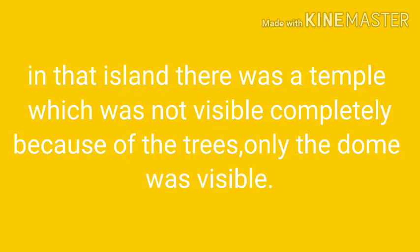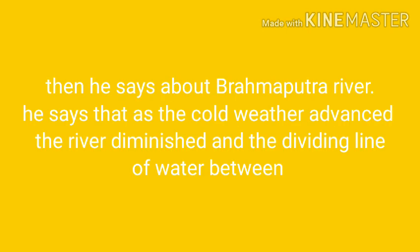In front of their house was Peacock Island. In that island there was a temple which was not completely visible because of the trees — only the dome of the temple was visible. Mockingly, he says that on that island he never saw any peacock but only monkeys. Yet the name of the island was Peacock Island.